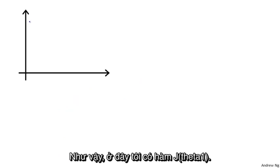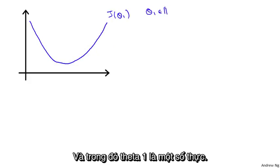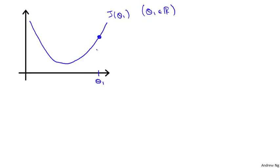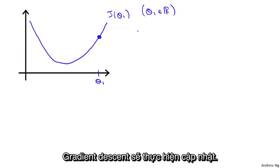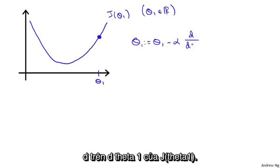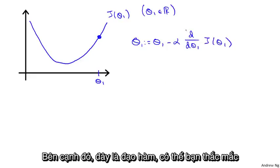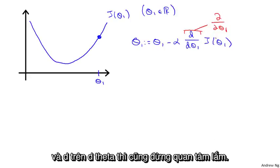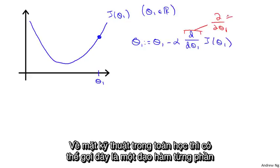Let's say here's my function J of θ₁, where θ₁ is a real number. Let's say I've initialized gradient descent with θ₁ at a certain location — imagine we start off at that point on the function. Gradient descent will update θ₁ as θ₁ minus α times d/dθ₁ of J(θ₁). Now, the derivative term — what the derivative at this point does is basically look at the tangent to that point, that red line just touching the function, and look at the slope of that line.